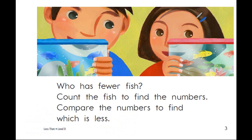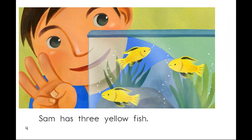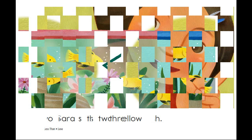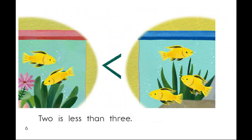Who has fewer fish? Count the fish to find the numbers. Compare the numbers to find which is less. Sam has three yellow fish. Sarah has two yellow fish. Two is less than three.